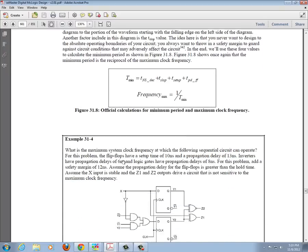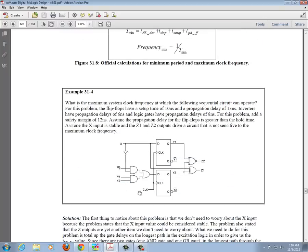So let's go through an example. Here we have a finite state machine. This is our next state decoder logic right here with gates. These are our state registers, our flip-flops, and our output decoder logic. So this question asks, what is the maximum system clock frequency at which the following sequential circuit can operate?